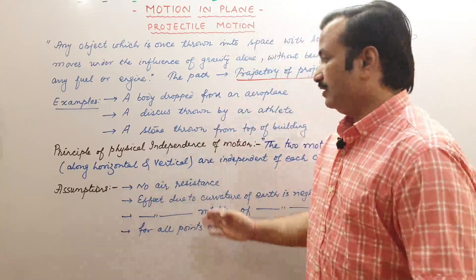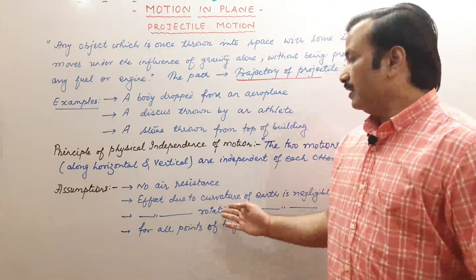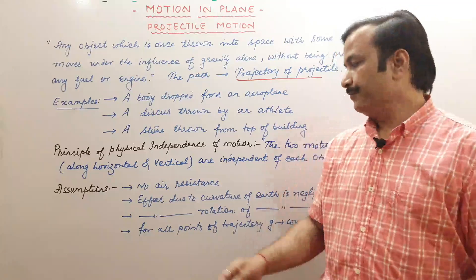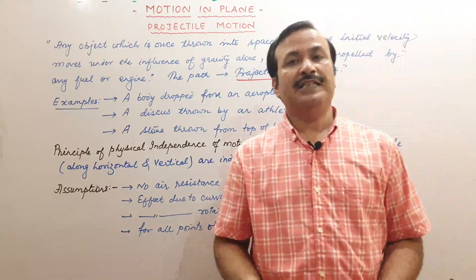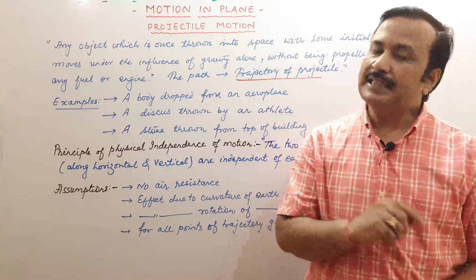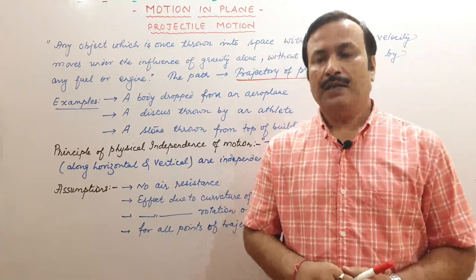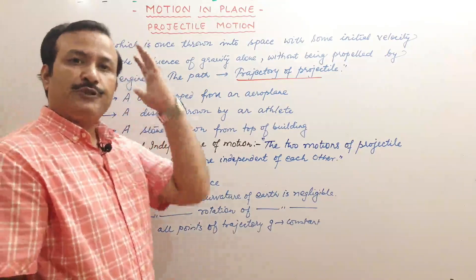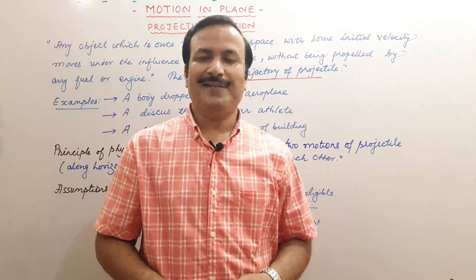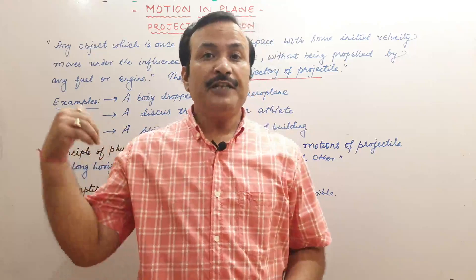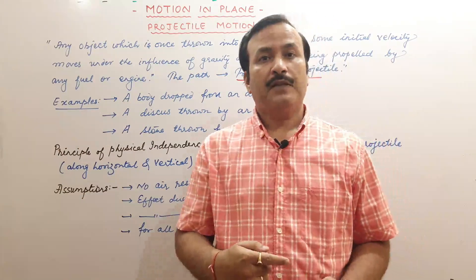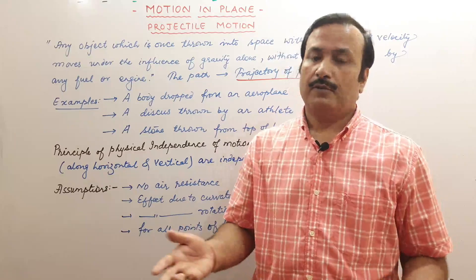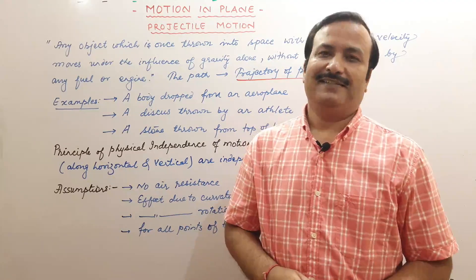A few assumptions: we do not deal with air resistance, we neglect the effect due to curvature of the earth, we neglect the effect due to rotation of the earth, and for all points of the trajectory, acceleration due to gravity is considered the same. One common student question — what about a rocket? A rocket is not a projectile because it is propelled by an engine or fuel, so a rocket is not a projectile.